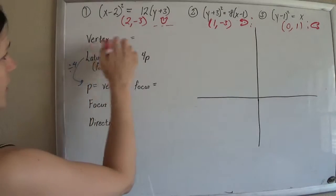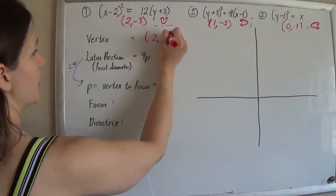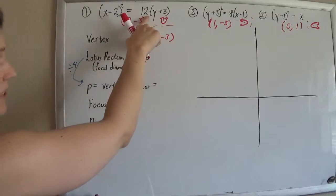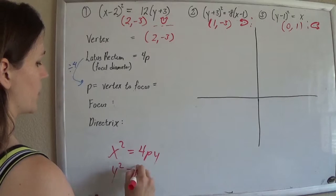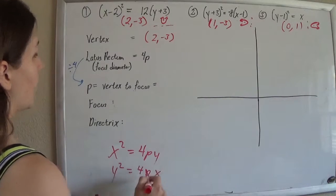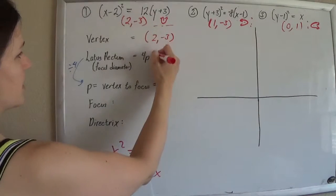So here we go. For the very first guy, I already figured out my focus was 2, negative 3. 4p is what's sitting right there. I should have written there in the form x squared equals 4py and y squared equals 4px.